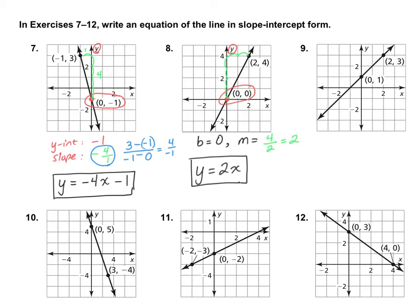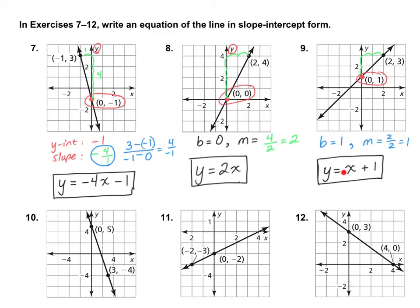Why don't you try number 9 on your own? Stop the video and then turn it back on when you're done. For number 9, I got y equals x plus 1. Notice the slope is 1, and I did not bother putting a 1 there because it's simpler not to. But if you wrote y equals 1x plus 1, I would not mark it wrong on a test or quiz.